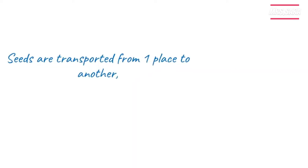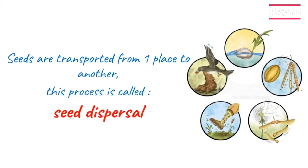So what is the meaning of seed dispersal? You know that all plants have seeds, and these seeds transport from one place to another by different ways. This is the meaning of seed dispersal — seeds are transported from one place to another.